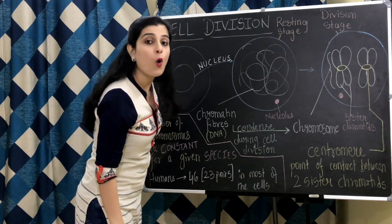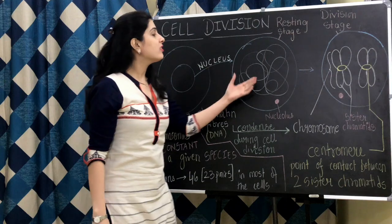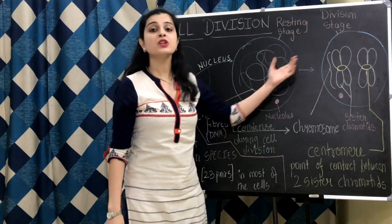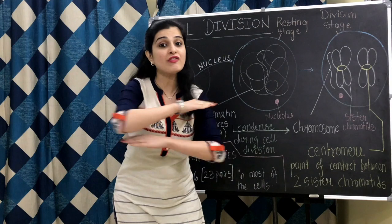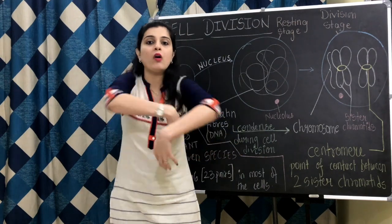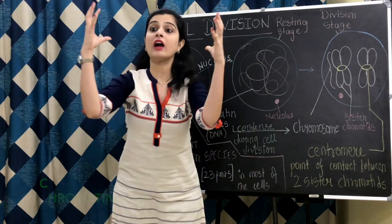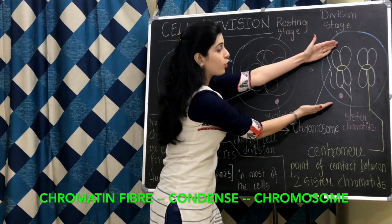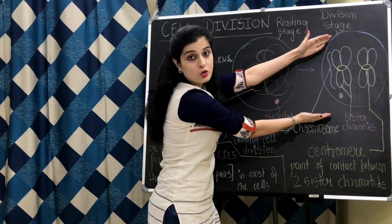Chromatin fibers are made up of DNA — that is your genetic material, deoxyribonucleic acid. Now when this cell enters into M phase, or division phase, your thread-like network called chromatin fibers is going to condense into something called chromosomes.